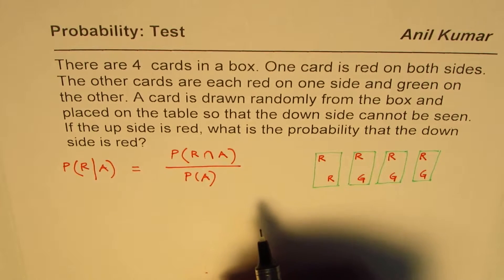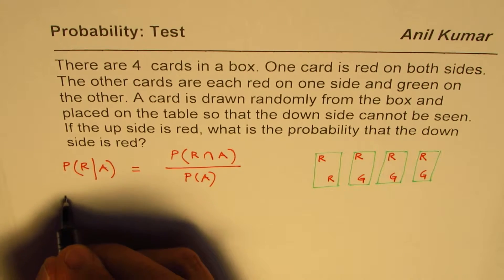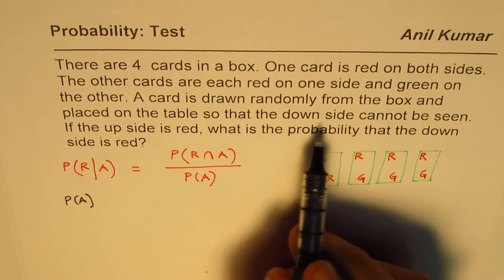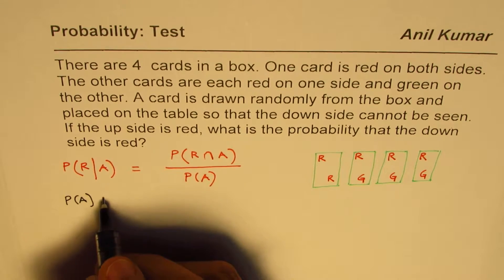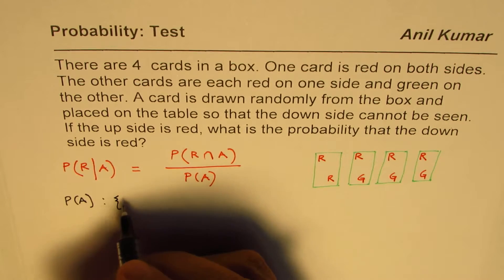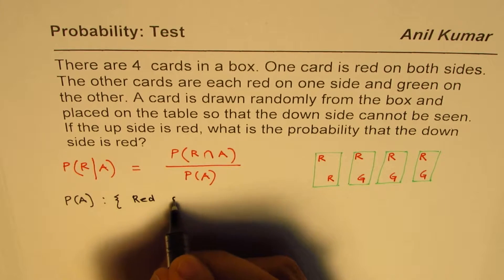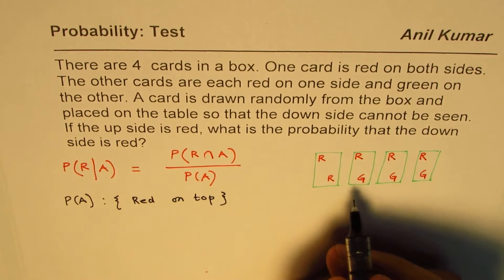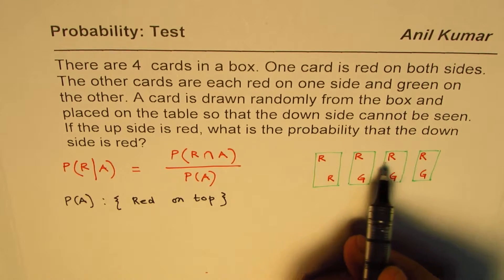Now in our case, probability of event A is what? Probability of event A is when we say that the top is red. So probability of event A is red on top when you make the first selection.